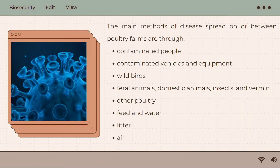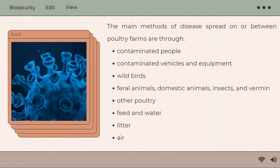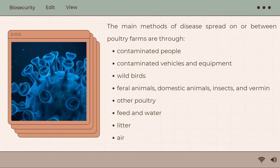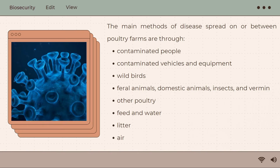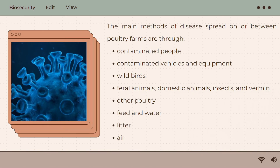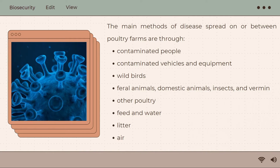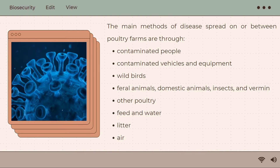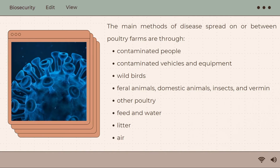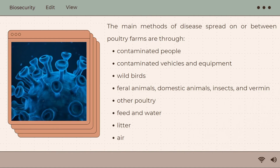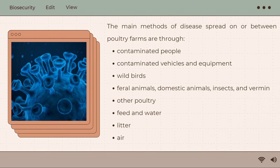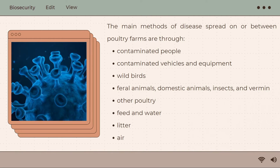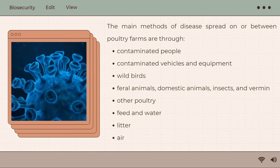The main methods of disease spread on or between poultry farms are through contaminated people, contaminated vehicles and equipment, wild birds, feral animals, domestic animals, insects and vermin, other poultry, feed and water, litter, and air.